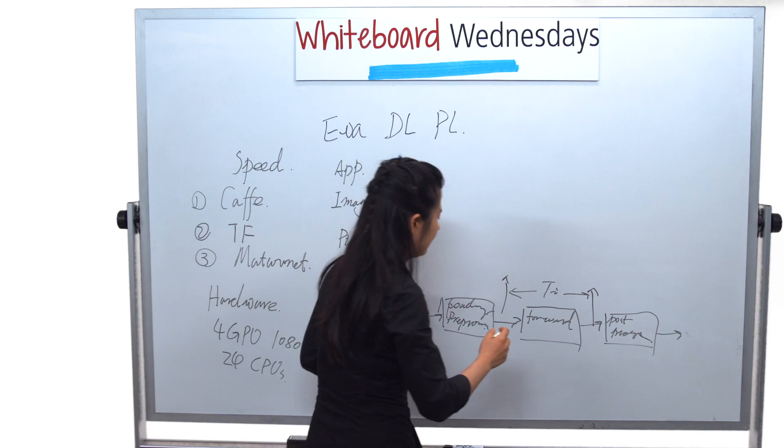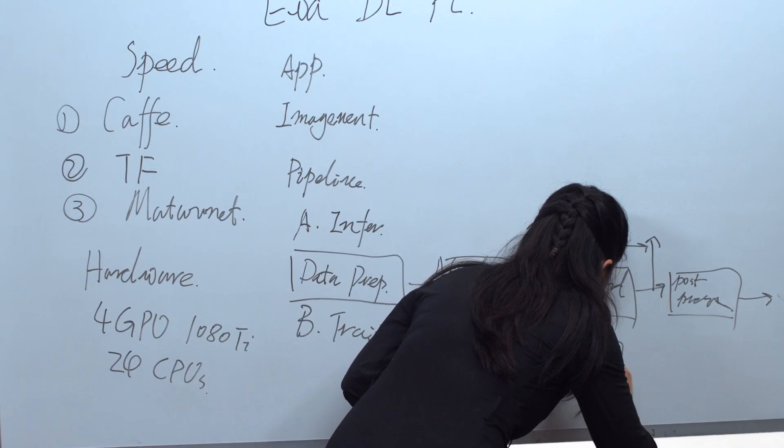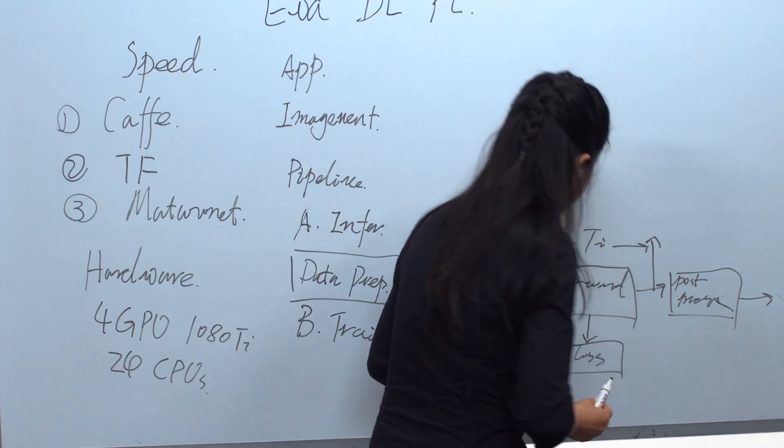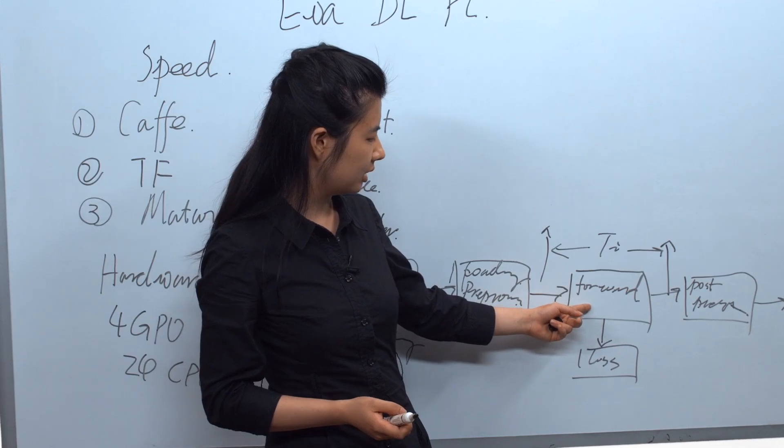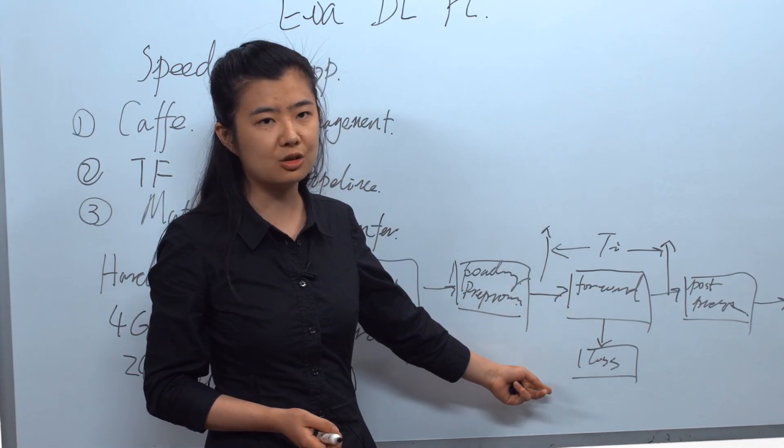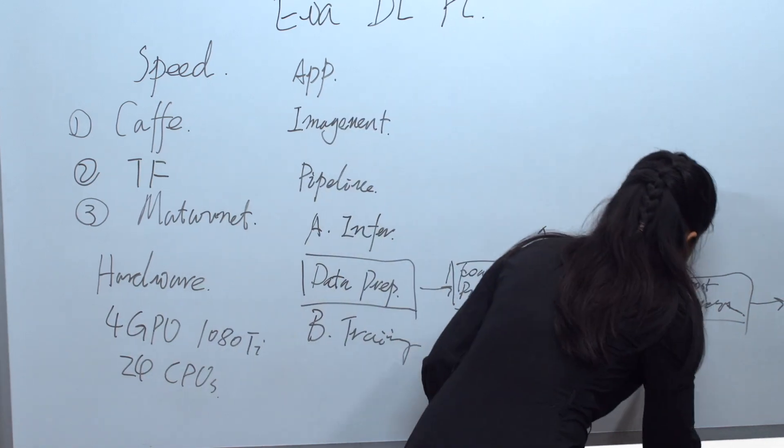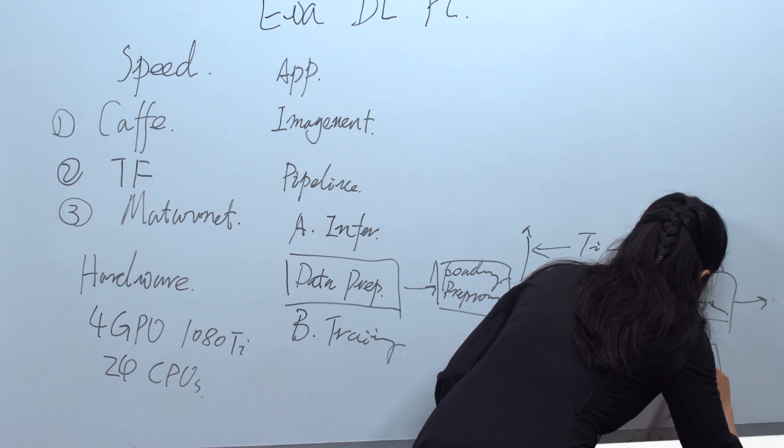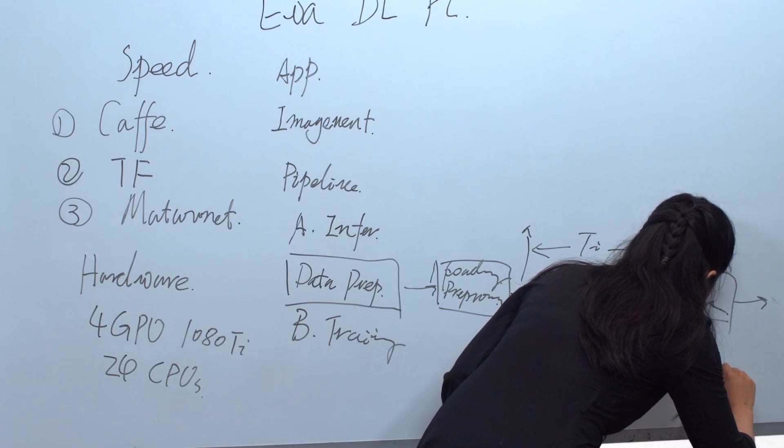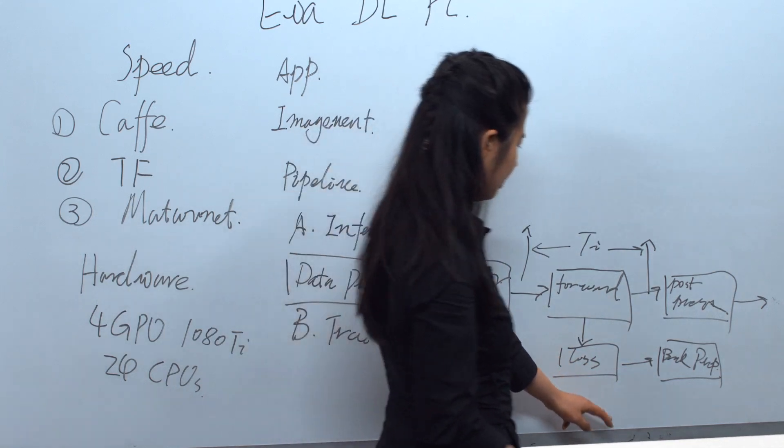After the forward process, we have a loss calculation. In the loss calculation, we compare the result of the forward process with the ground truth and calculate the loss. According to the loss, we do backpropagation to update all the parameters in the network.